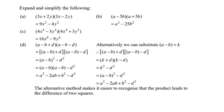For b: (a − 5b)(a + 5b). Again a similar situation — negative in the middle, square a and square 5b: a² − 25b². For c: a very similar situation — 4x⁴ times 4x⁴ is 16x⁸, and 3y³ times 3y³ is 9y⁶.